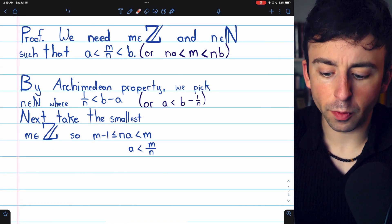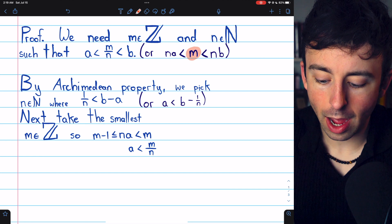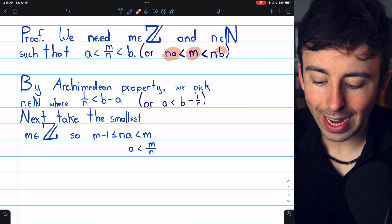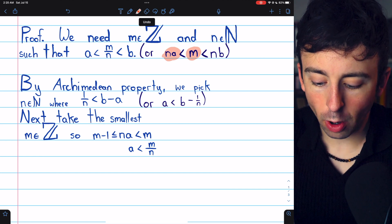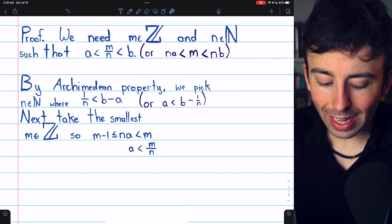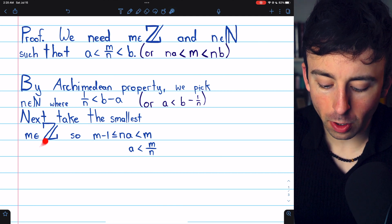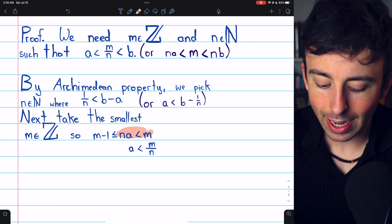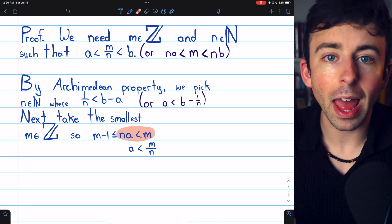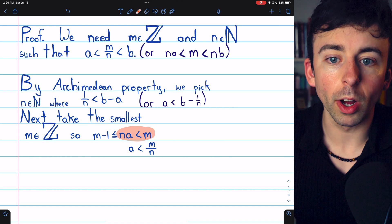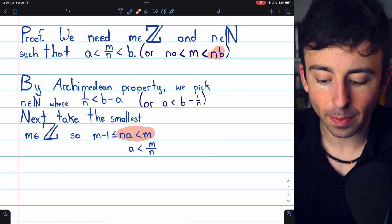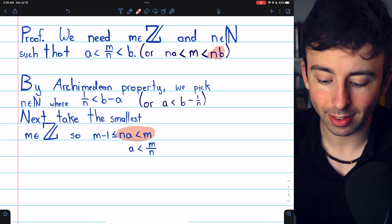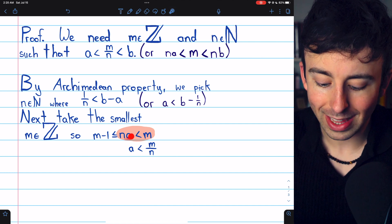Next, like we said before, we want our numerator, M, to be between NA and NB. So for our numerator, we'll take the smallest integer, M, so that M is greater than NA. Obviously, we don't want M to be too big. We don't want it to go past NB. That's why we're taking the smallest integer that's greater than NA.